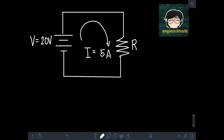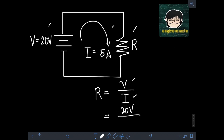Next, if it is known that the current flowing through an unknown resistor is 5A and it is connected to a 20V battery, we can solve for the value of the resistance using Ohm's Law: R is equal to voltage V over current I. Substituting the values, V is 20V divided by current 5A. Therefore, the resistance R is equal to 20 divided by 5, or 4Ω.